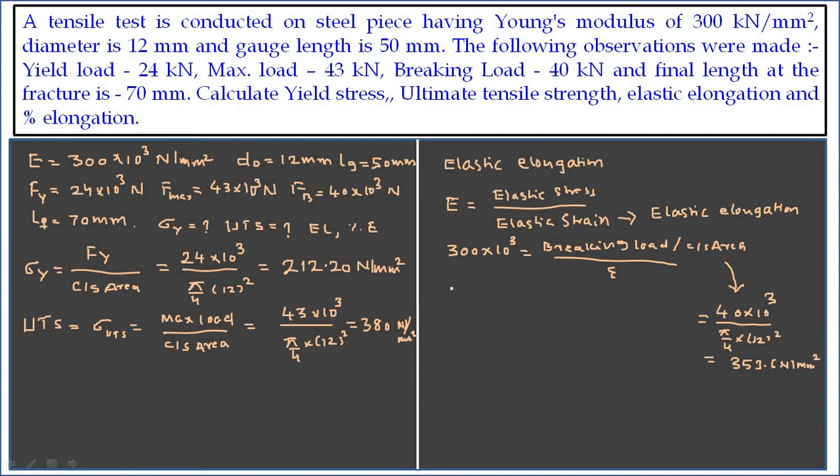Let's substitute the value. That is 300 into 10 raise to 3, which is equal to 353.6 divided by the elastic strain, or that is nothing but elastic elongation. So my elastic elongation can get it by the equation and it comes out to be 1.178 into 10 raise to minus 3.